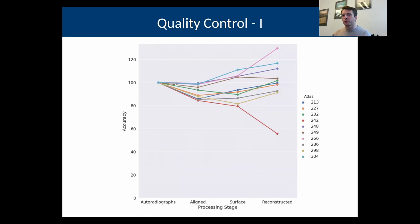Here we have the quality control algorithm that's been run for slab one at a one millimeter reconstruction. For the raw autoradiographs, of course, they have 100% accuracy. That's our baseline. With the aligned sections the accuracy goes down a bit, it gets somewhat worse on the surface, and then somewhat improves for the reconstructed sections, except for some outliers.